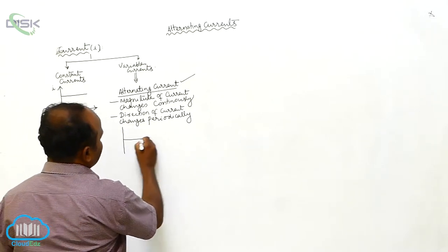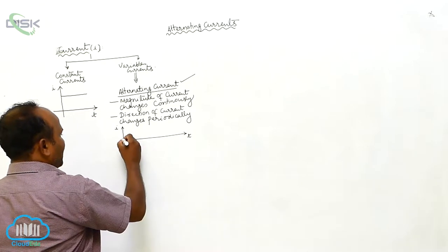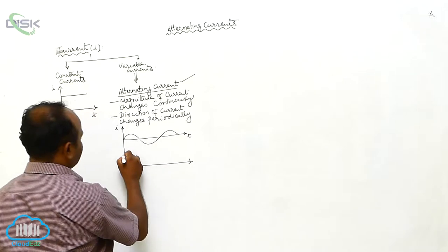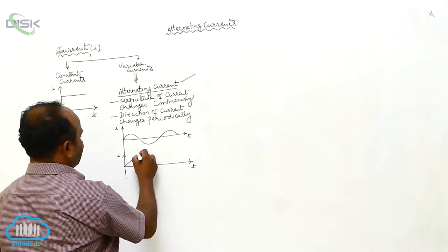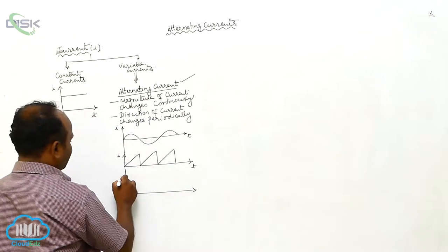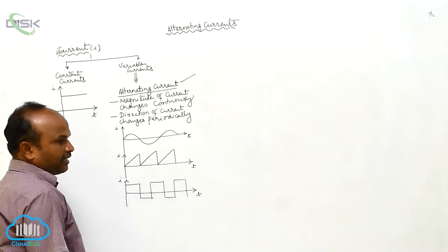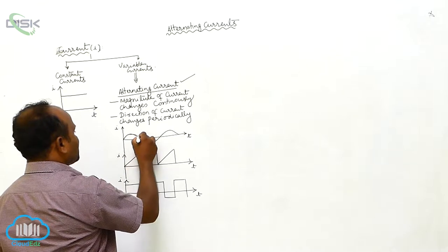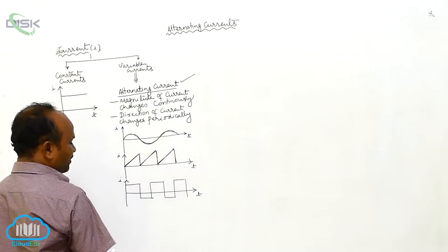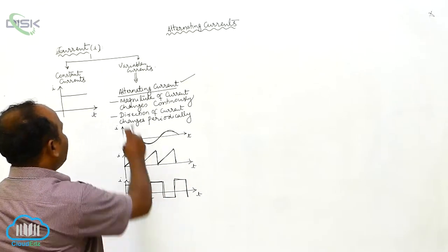What is the graphical representation? Plotting I on the Y axis and T on the X axis. This is one type of alternating current. This is also an alternating current. This is also an alternating current. This is called sinusoidal alternating current. This is called sawtooth alternating current. This is called rectangular alternating current.